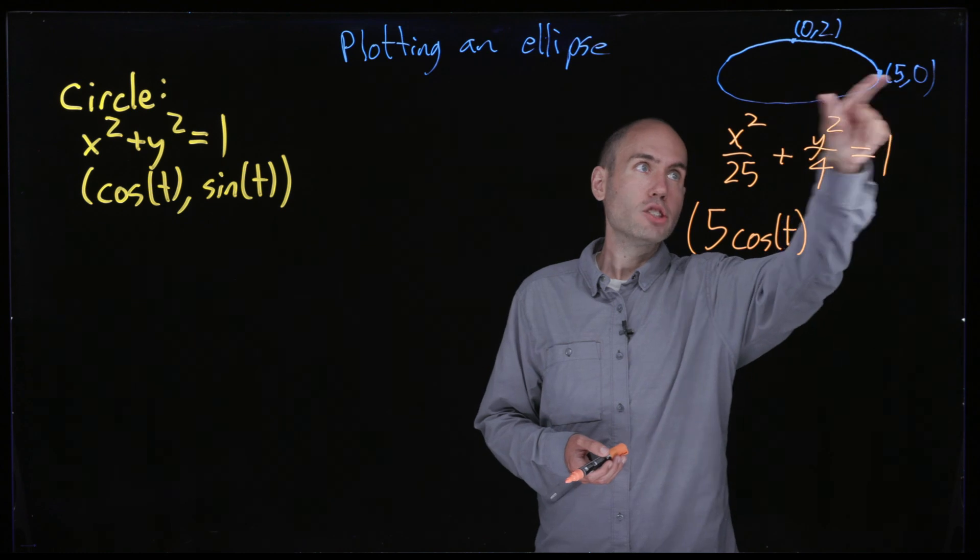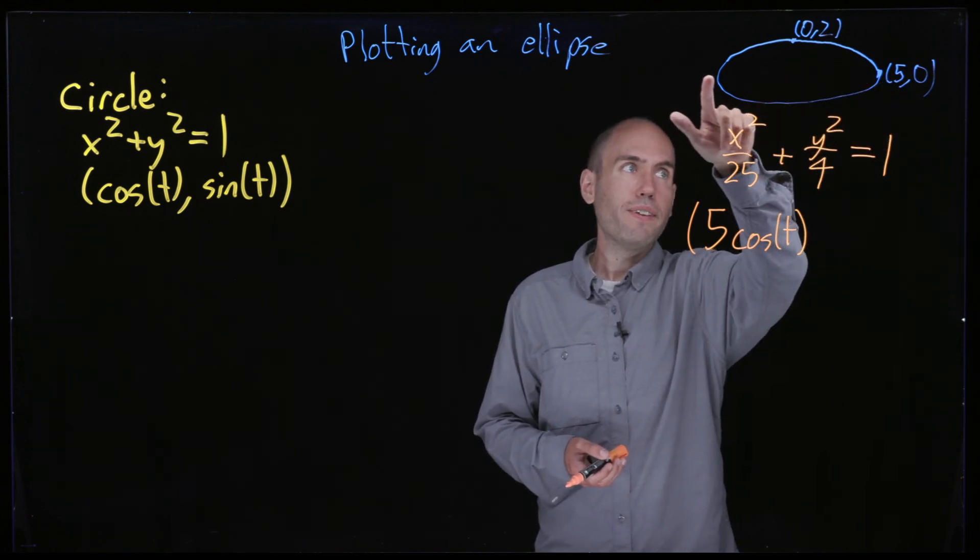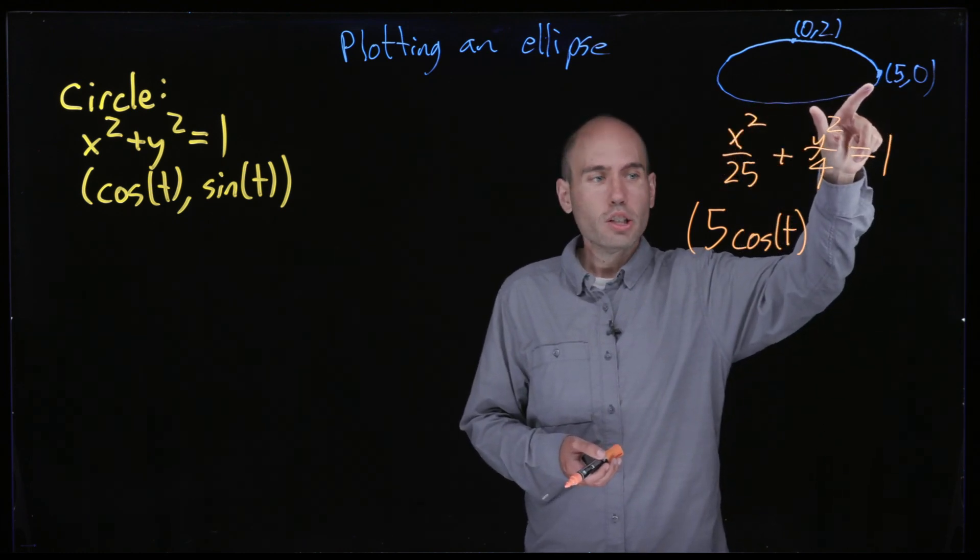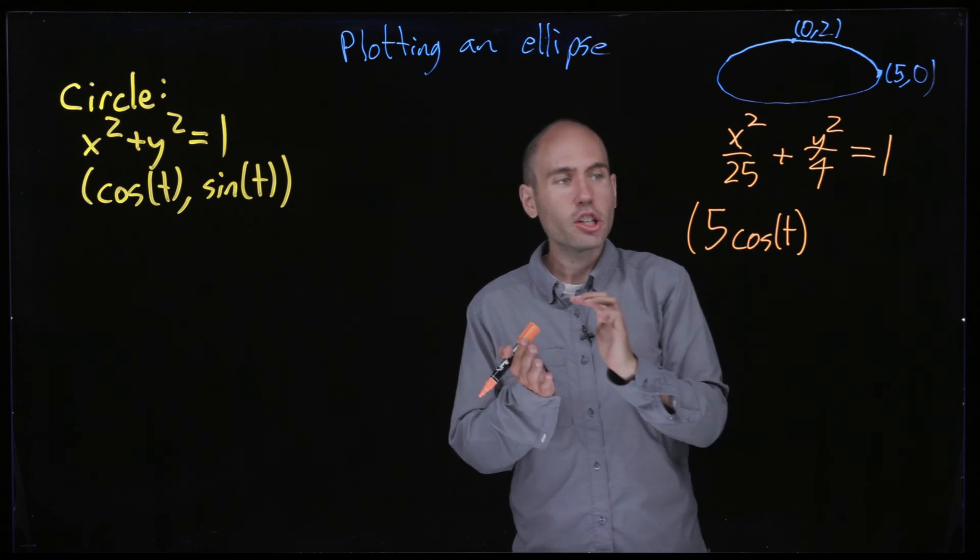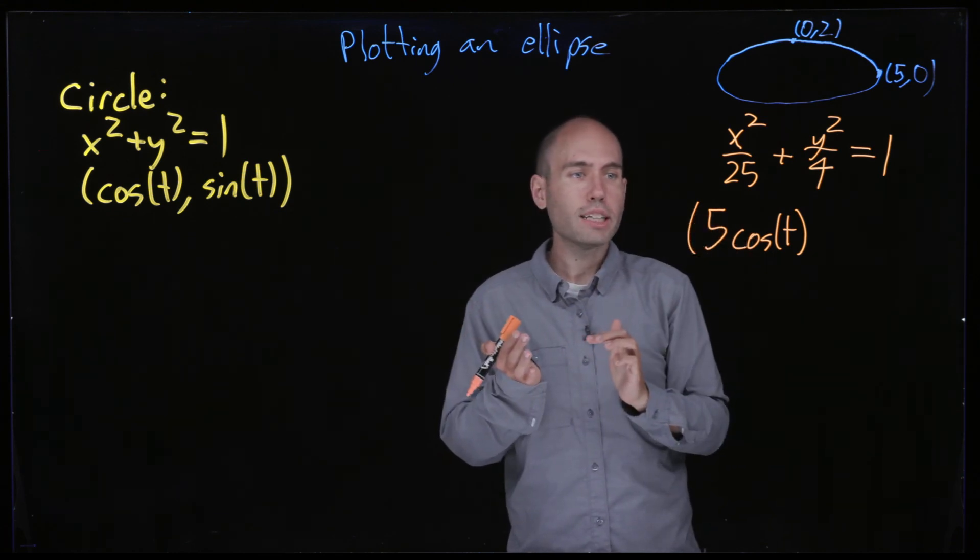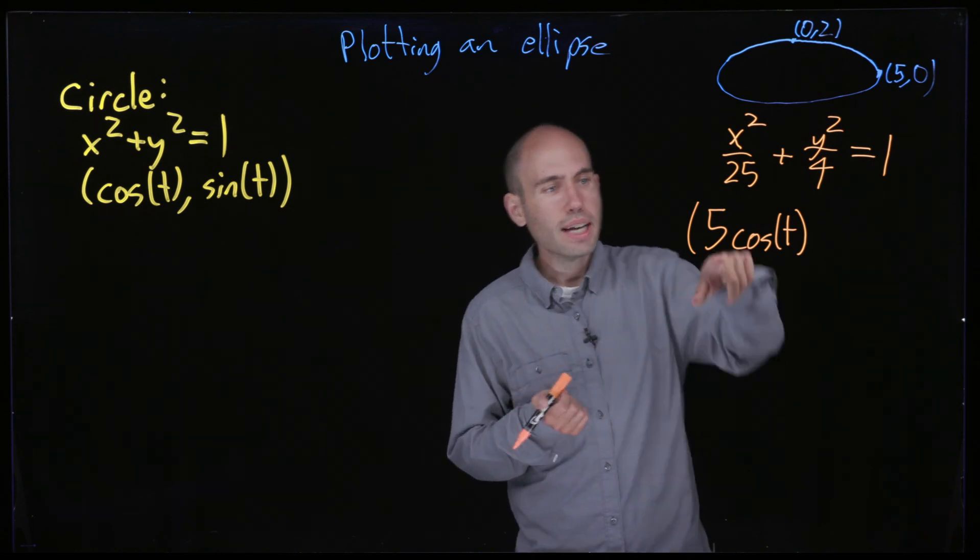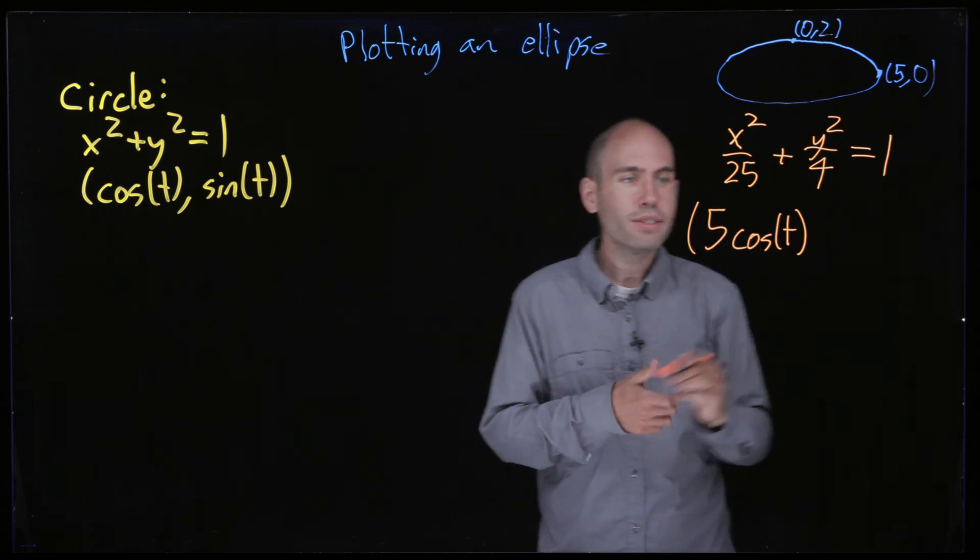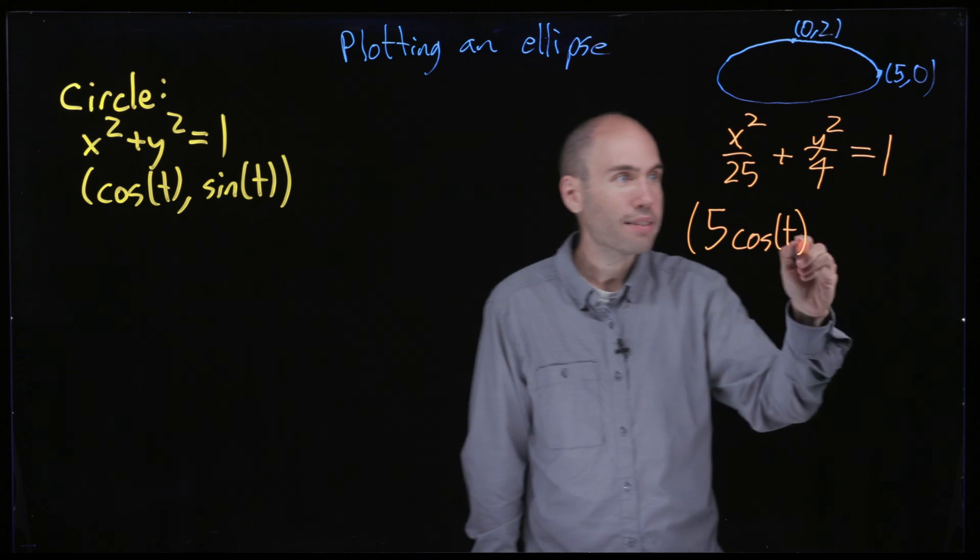What do I want the range to be? I want it to be negative 5 to positive 5. So how can I take a function whose range is negative 1 to 1 and get a function whose range is negative 5 to 5? I can multiply it by 5. So that's another way to see where this 5 comes from.